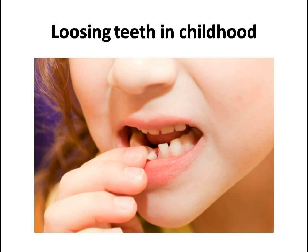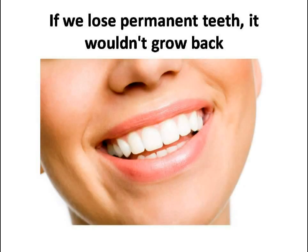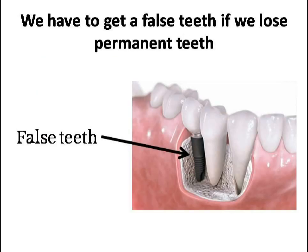The teeth you lose in your childhood are temporary teeth, or milk teeth. A three-year-old child has 20 teeth, and we lose all of our milk teeth one by one, but permanent teeth grow in their place. However, if you lose a permanent tooth, it wouldn't grow back. Adults have 32 teeth, and if you lose any of them, you have to get false teeth.